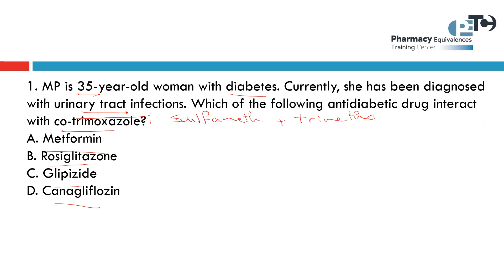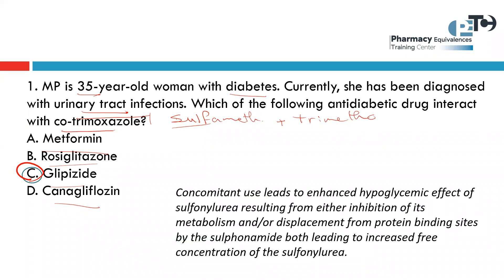The problem here is with glipizide. Why? Glipizide is one of the sulfonylureas. So there is an interaction between sulfamethoxazole and sulfonylurea. The concomitant use leads to an enhanced hypoglycemic effect of sulfonylurea, due to inhibition of glipizide metabolism and also displacement from protein-binding sites, leading to a very high level of glipizide and extra hypoglycemic effect. So we should not use sulfamethoxazole plus glipizide or any sulfonylurea.